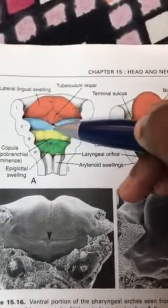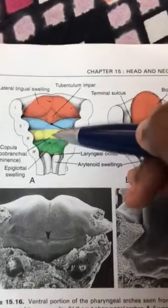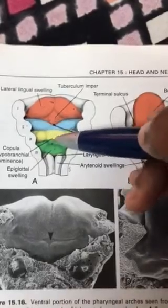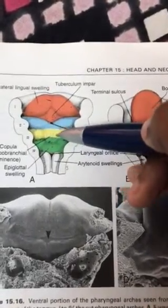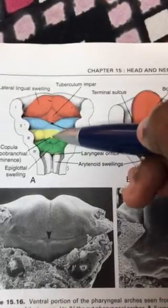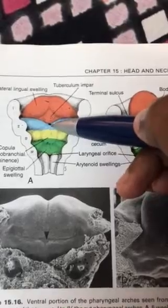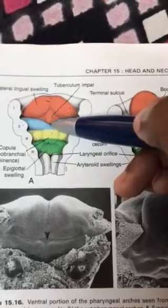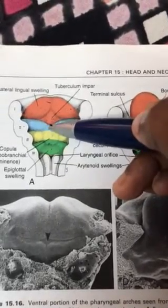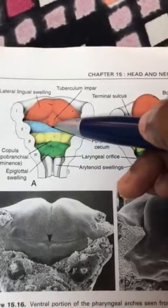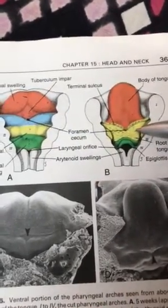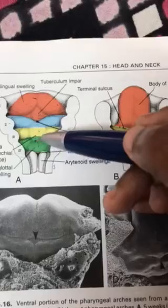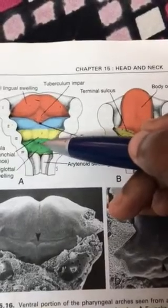Behind the foramen cecum, from the second arch, the blue-colored swelling is the cupula. The third and fourth arches join together forming the hypobranchial eminence. The anterior part of the hypobranchial eminence overgrows above the cupula, so the cupula becomes submerged and is not visible. The yellow-colored third arch tissue overlaps the cupula and forms the posterior one-third of the tongue.